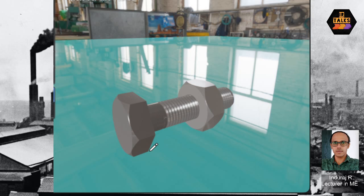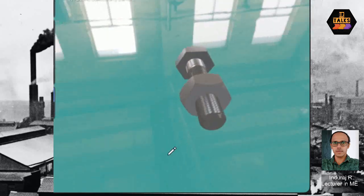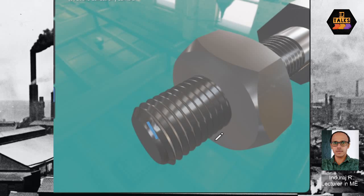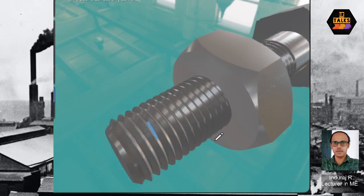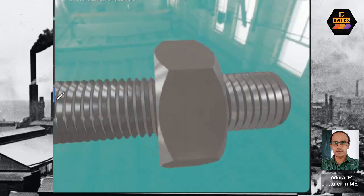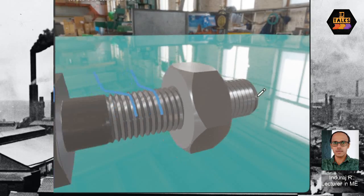For left-hand thread, we use it in applications like a mixer blade. We call single start thread and multi-start thread. When we start rotating the thread, we carry out movement along the same thread. With a single start thread, there is one starting point; with a multi-start thread, we have more than one starting point — for example, two starting points.